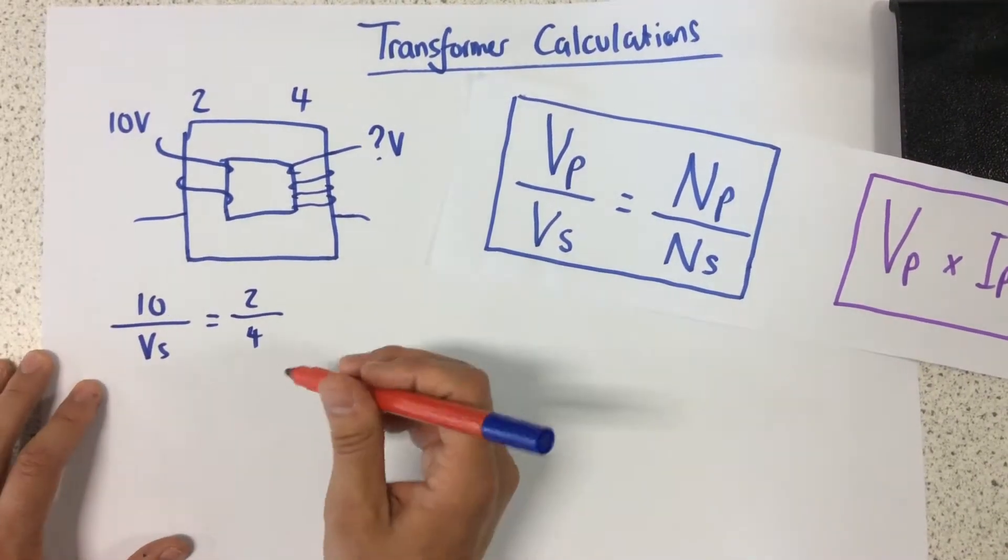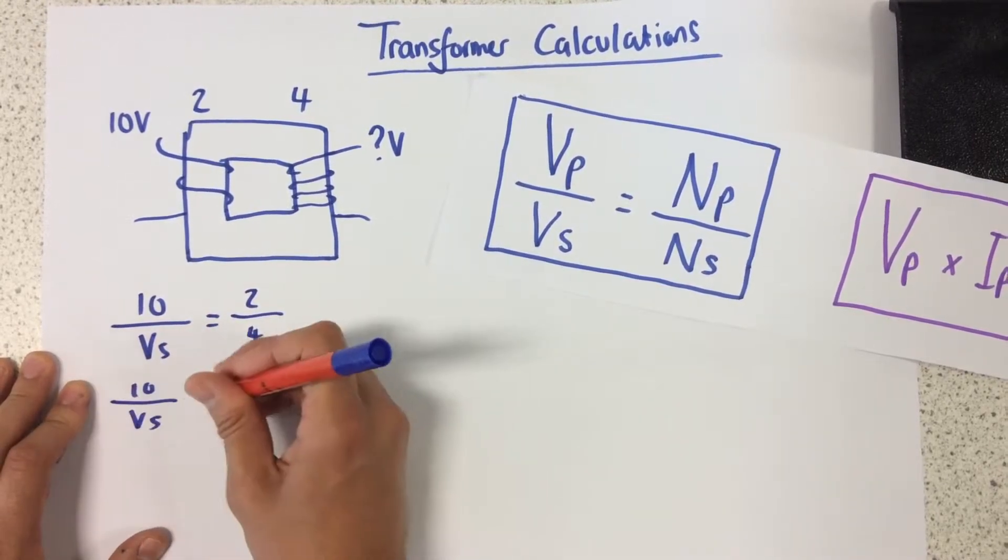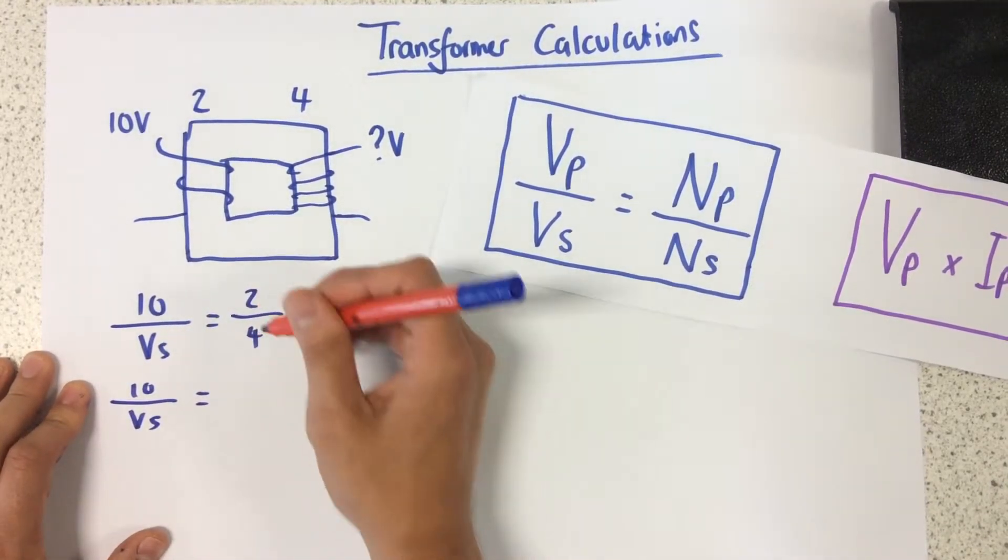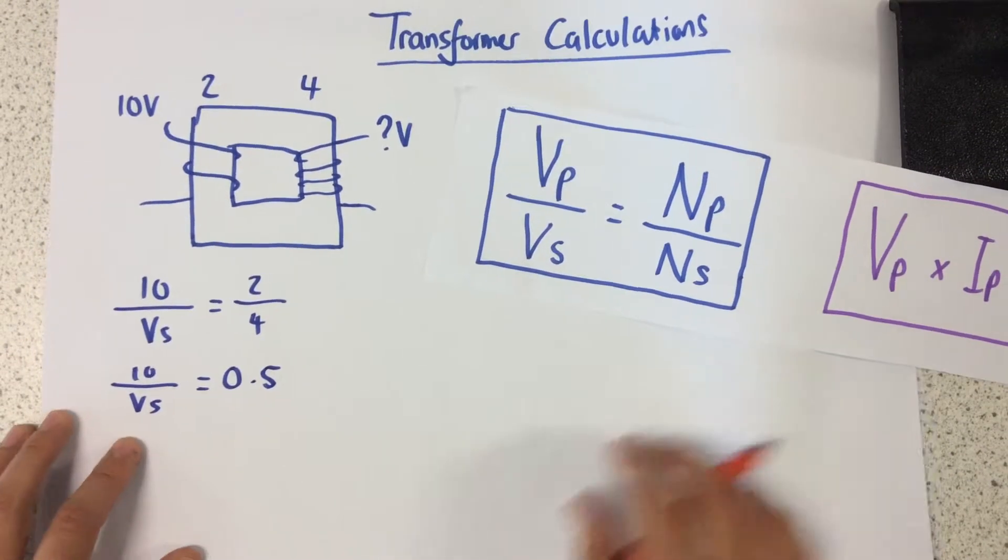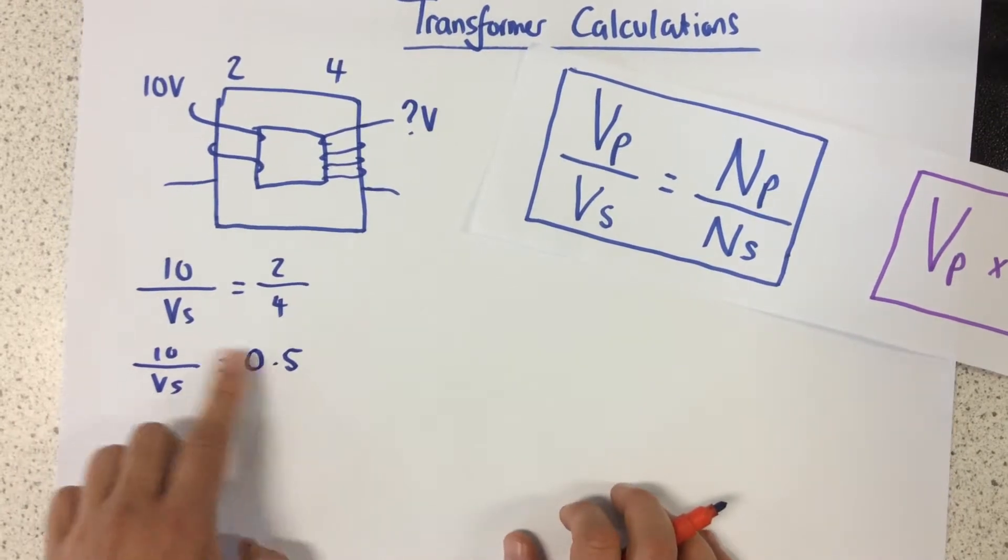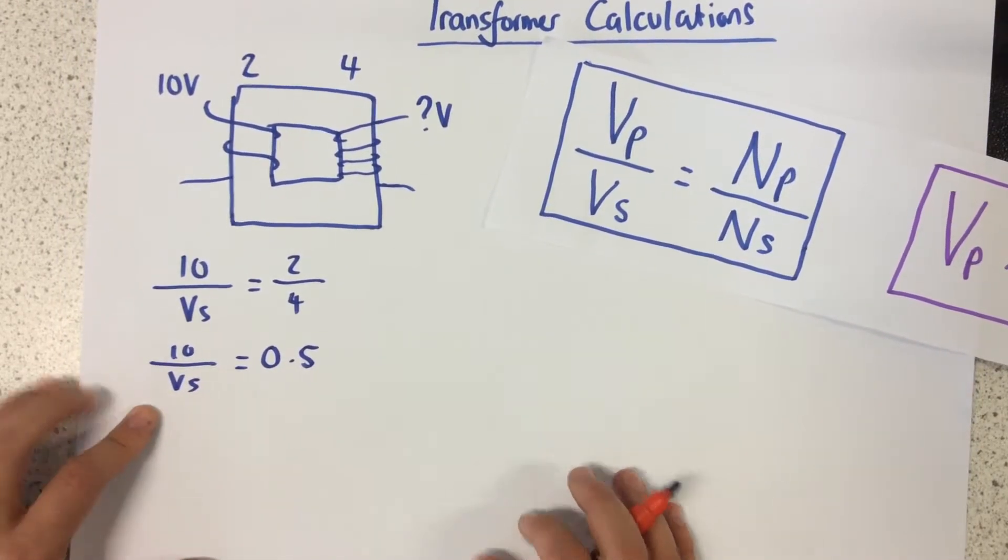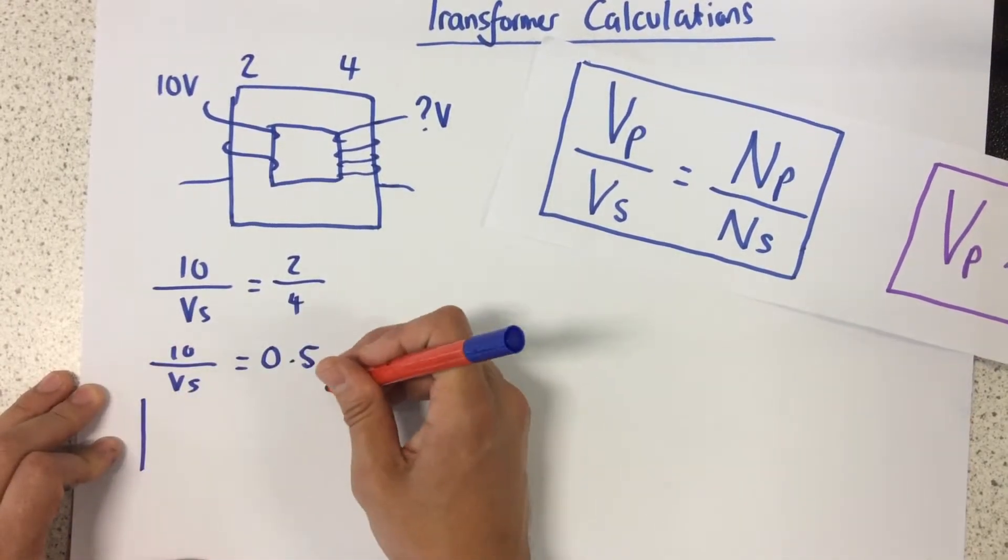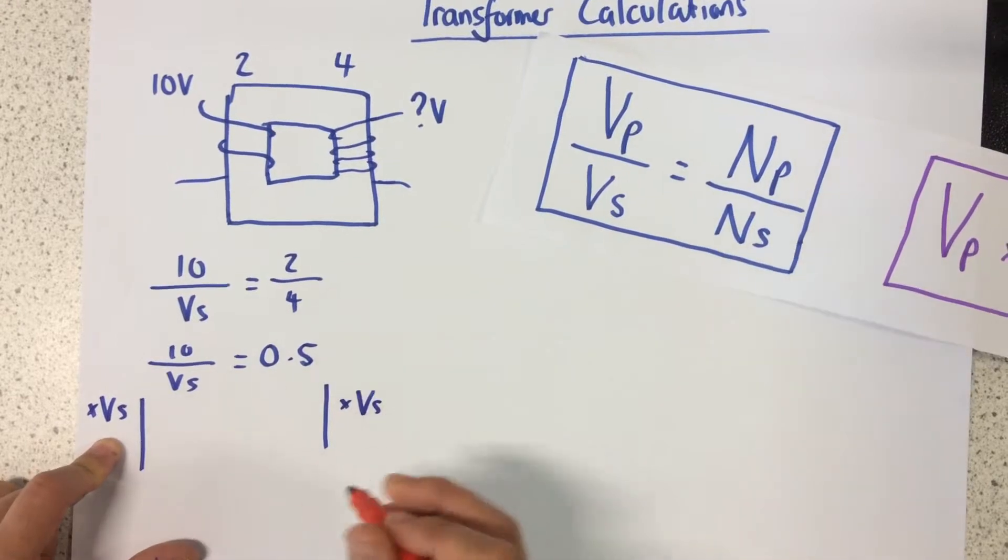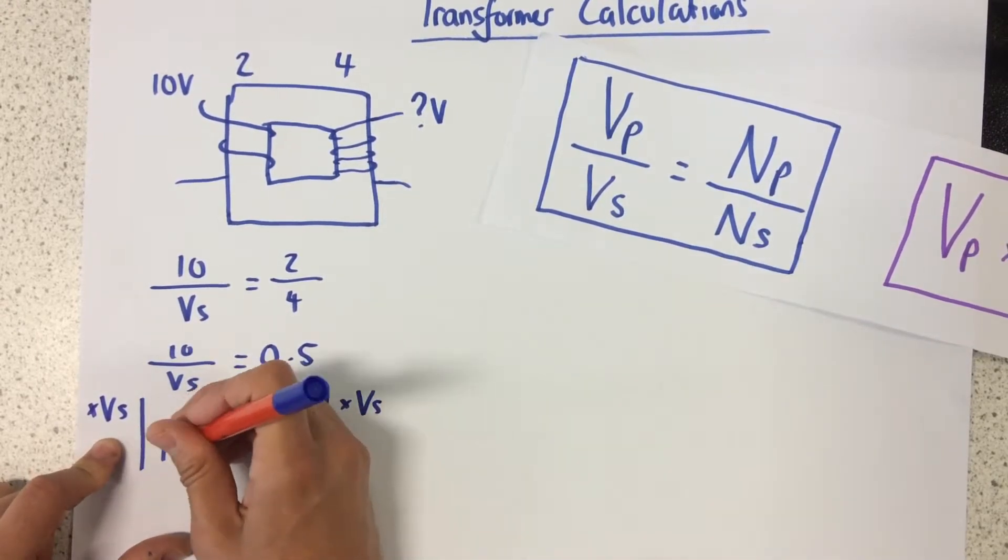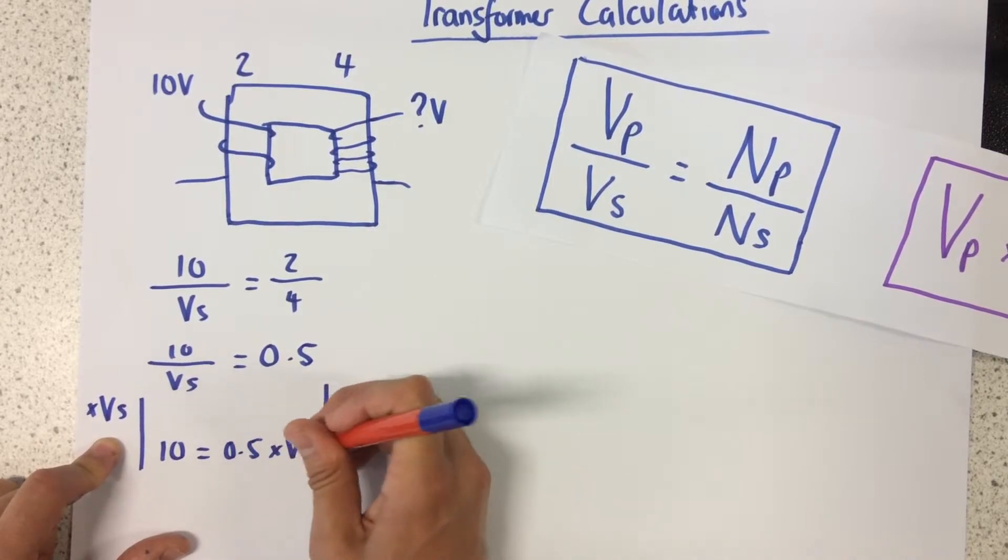Now I'm just going to simplify this a little bit to make it easier. So that's going to be 10 divided by Vs equals 2 divided by 4, which is 0.5. So what I need to do now is I need to rearrange this equation to make Vs the subject of the equation. So what I'm going to do first of all is I'm going to multiply both sides by Vs, and that will give me 10 equals 0.5 times Vs.